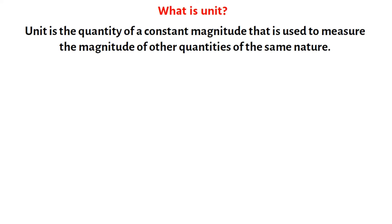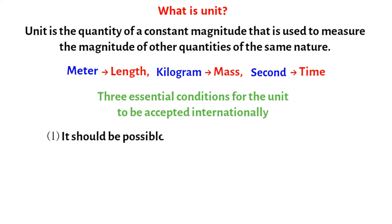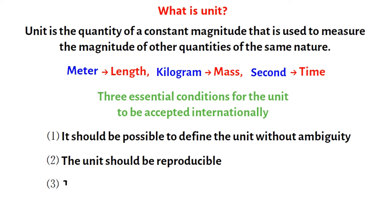What is unit? Unit is the quantity of a constant magnitude that is used to measure the magnitude of other quantities of the same nature. As in the example above, meter is used as the unit of a constant magnitude for length. Similarly, kilogram is used for mass, and second for time. But to accept any unit internationally, we need to follow three essential conditions. It should be possible to define the unit without ambiguity, the unit should be reproducible, and the value of the unit should not change with space and time.